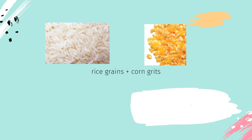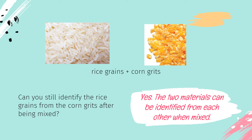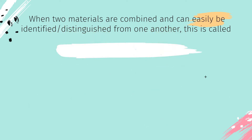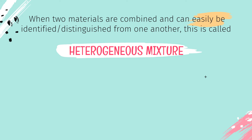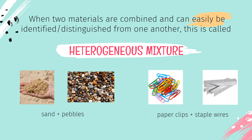How about combining rice grains and corn grits? Can you still identify the rice grains from the corn grits after being mixed? The answer is yes — the two materials can be identified from each other when mixed. When two materials are combined and can easily be identified or distinguished from one another, this is called a heterogeneous mixture. Just like when we combine sand and pebbles, or paper clips and staple wires — the two materials can still be distinguished from each other even after being mixed.